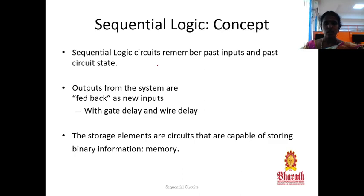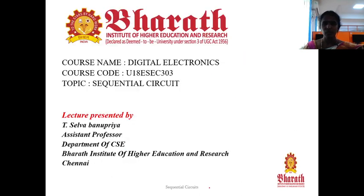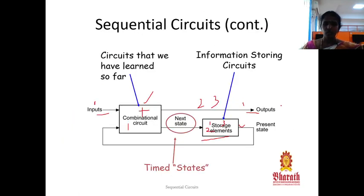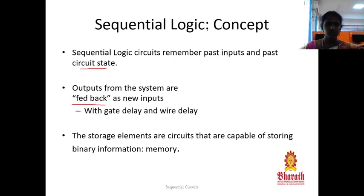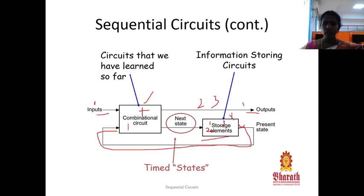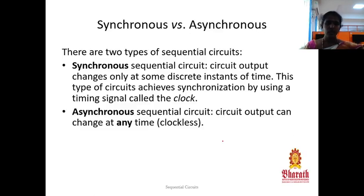The logic circuit remembers the past input and the past circuit state — that is, the previous output. We are using a feedback link, where the previous output is given back as input again to the circuit. This feedback path allows storage elements — circuits capable of storing binary information — to act as memory. We need a storage element to store the values. This is the basic concept of sequential circuit.